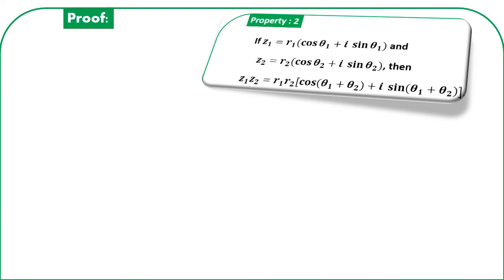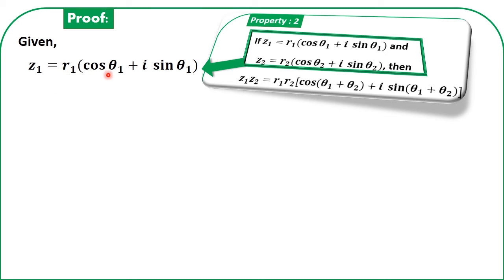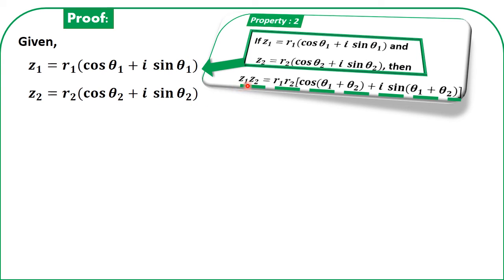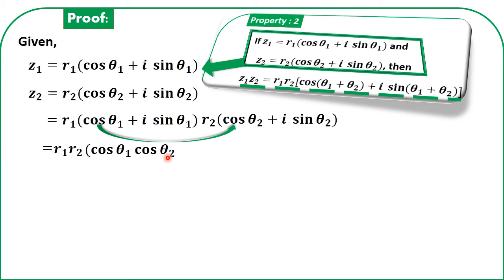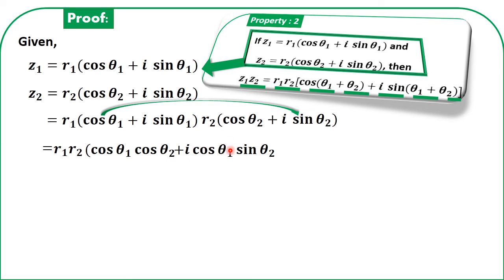Now let us prove this. Given z₁ = R₁(cos θ₁ + i sin θ₁) and z₂ = R₂(cos θ₂ + i sin θ₂). We want to prove z₁z₂ = R₁R₂[cos(θ₁ + θ₂) + i sin(θ₁ + θ₂)]. Multiplying the two, we get R₁R₂ times (cos θ₁ cos θ₂ + i cos θ₁ sin θ₂ + i sin θ₁ cos θ₂ + i² sin θ₁ sin θ₂).